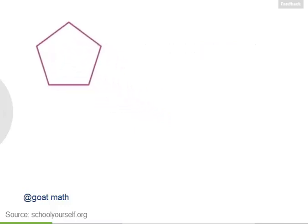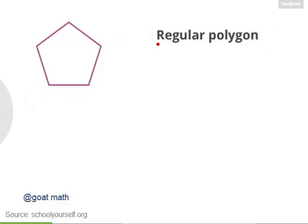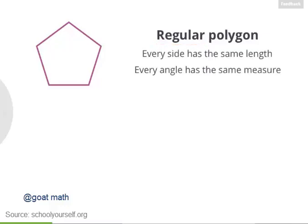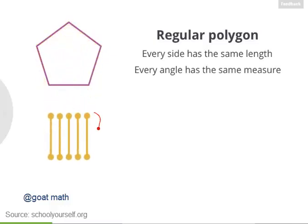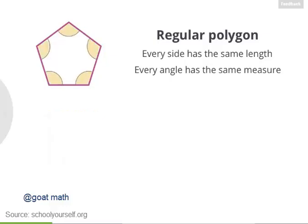Let's take a closer look. This is a special kind of pentagon known as a regular pentagon. For a polygon to be called regular, every side must have the same length, and every angle must have the same measure. So if we look at this pentagon's five sides, they all have the same length. And if you look closely at all five angles, you'll find that they all have the same measure.